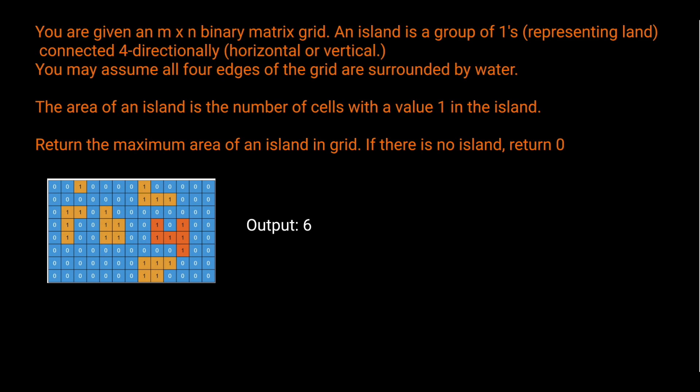You are given an m by n binary matrix grid. An island is a group of ones representing land, connected four-directionally — horizontal or vertical. You may assume all four edges of the grid are surrounded by water. The area of an island is the number of cells with a value of 1 in the island. Return the maximum area of an island in the grid. If there is no island, return 0.